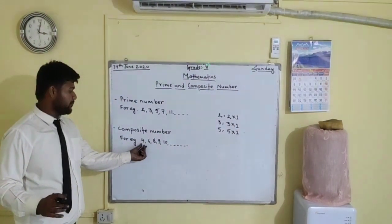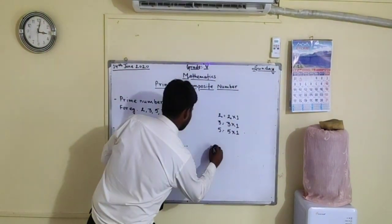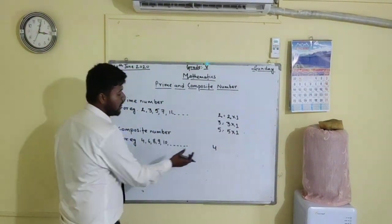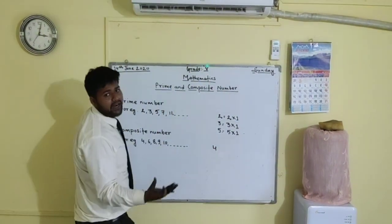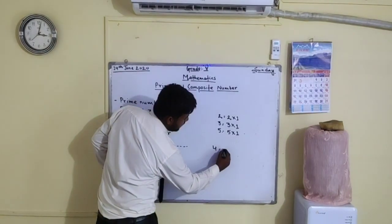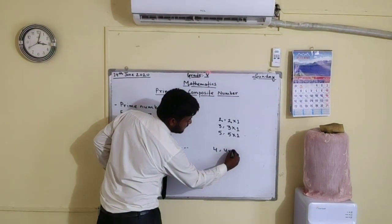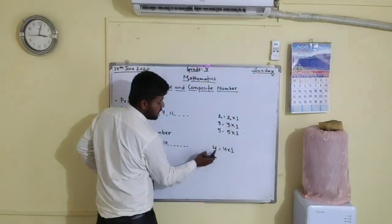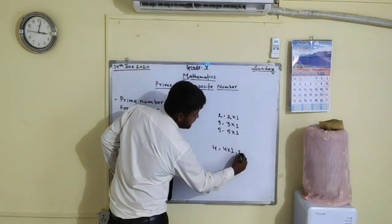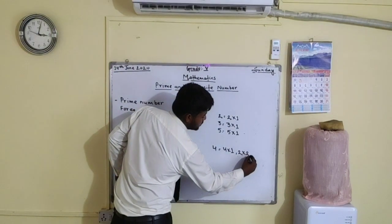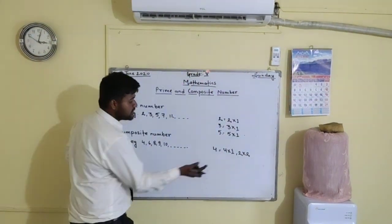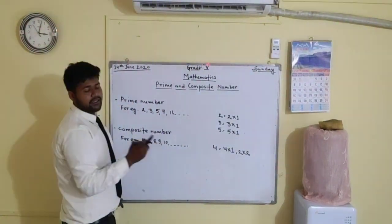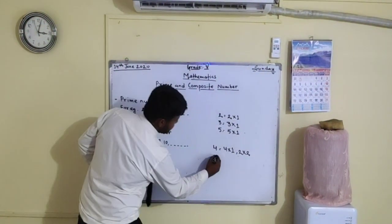Now how is 4 a composite number? This 4 is a composite number because it has got one other factor than one and itself. For example, 4 and 1 — it is divisible by 4 also and by 1 also. But this 4 is divisible by 2 also. So it has got at least one factor other than one and itself. So this 4 is a composite number.